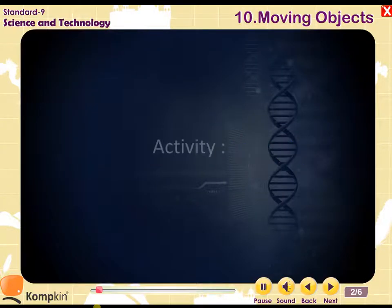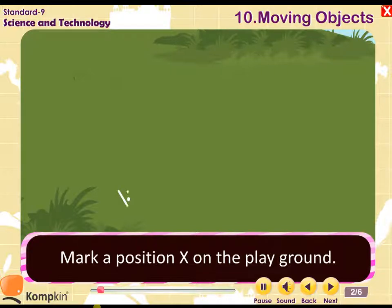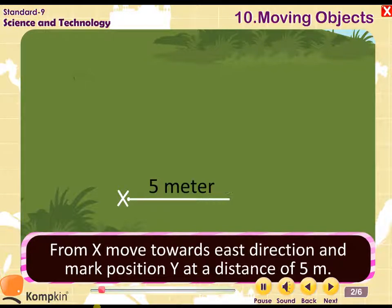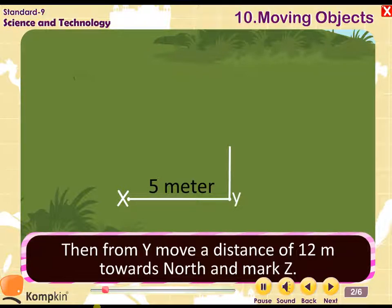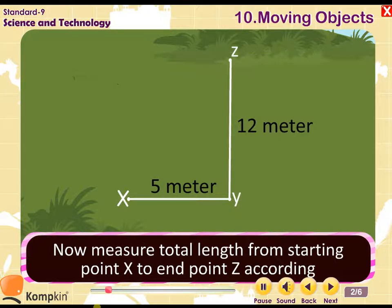Displacement and velocity. Activity: Mark a position x on the playground. From x move towards east direction and mark position y at a distance of 5 meters. Then from y move a distance of 12 meters towards north and mark z.